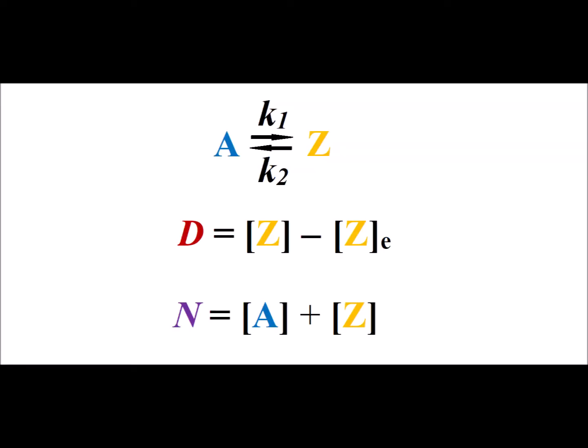The reaction we're going to monitor is this A to Z reaction, where K1 is the rate constant in the forward direction, K2 is the rate constant in the reverse direction, D is the difference between the current concentration of the product Z and its equilibrium concentration, and N is the total of the concentrations of A and Z.